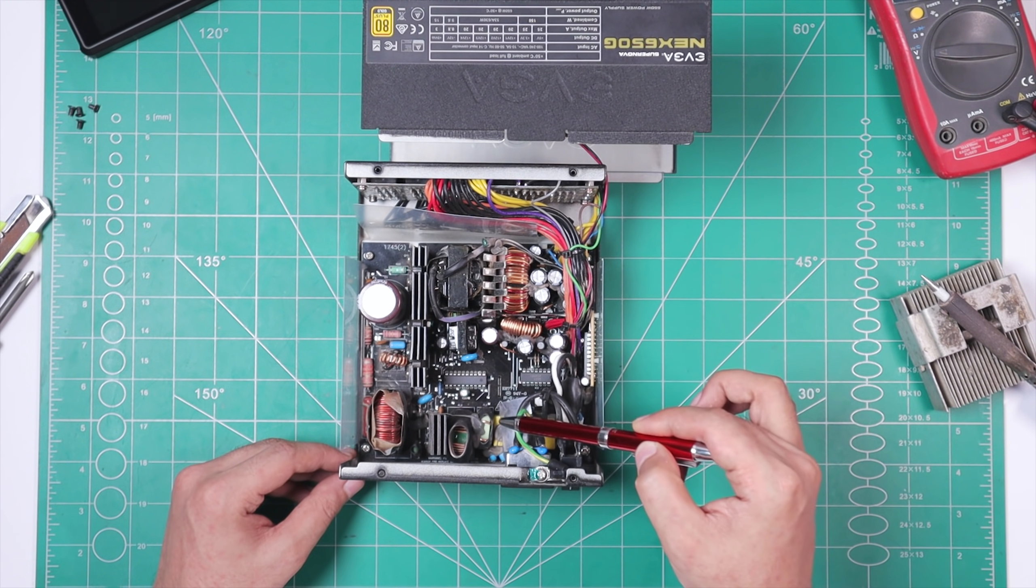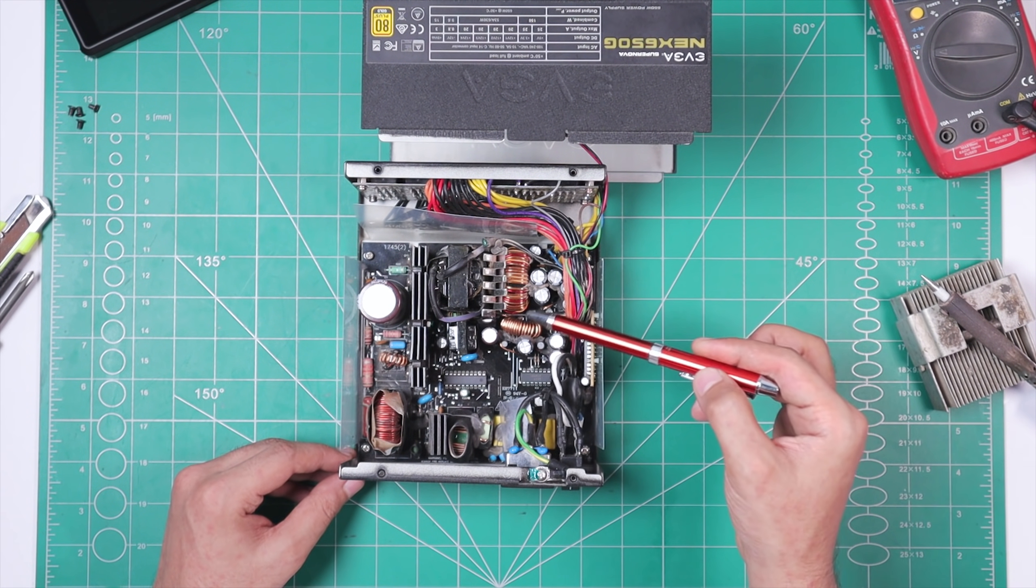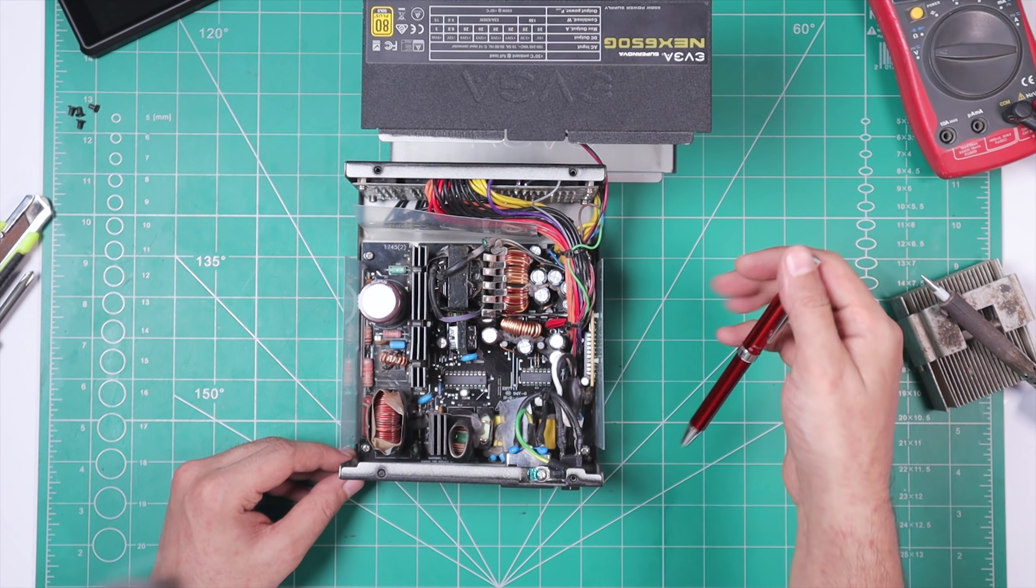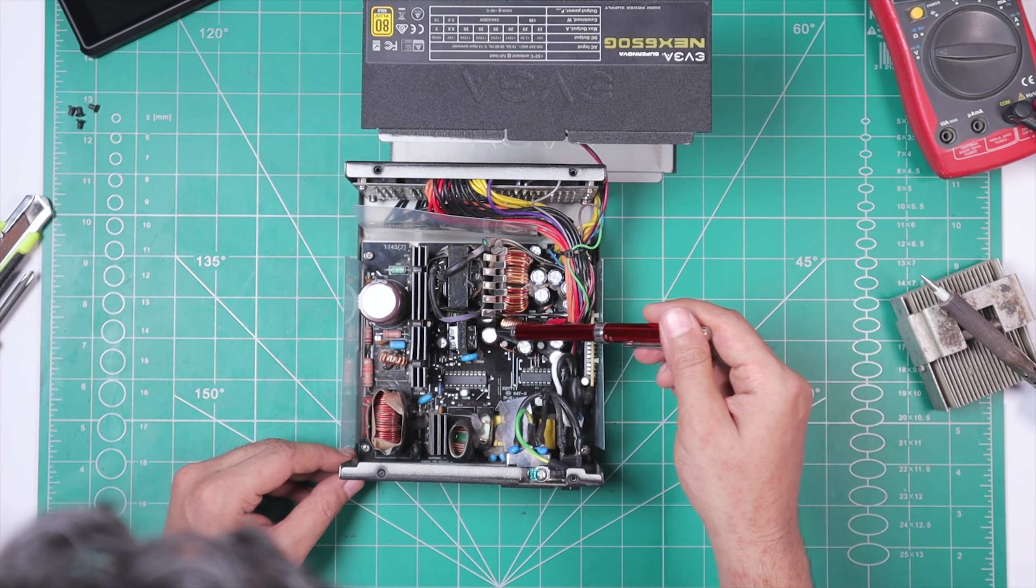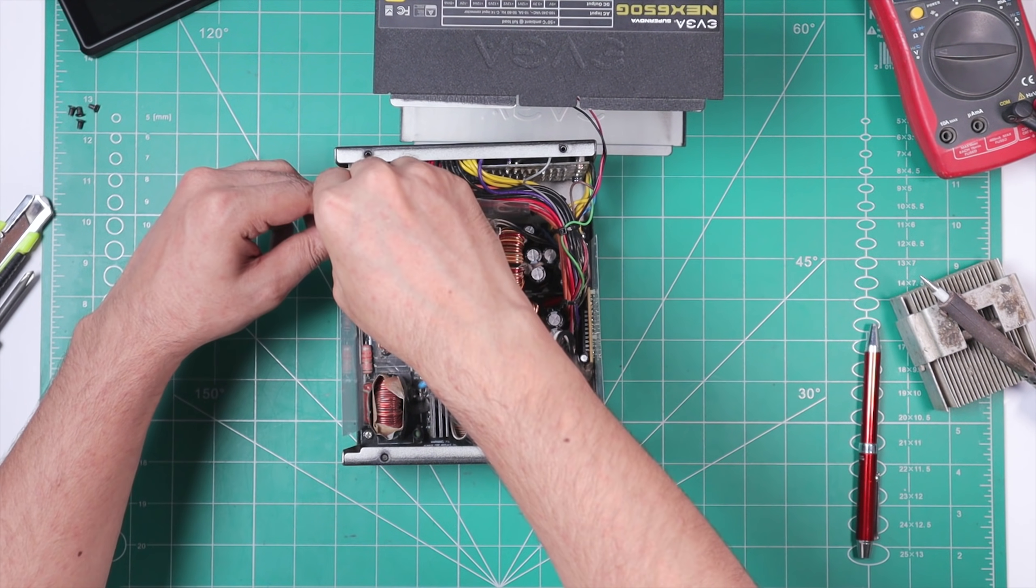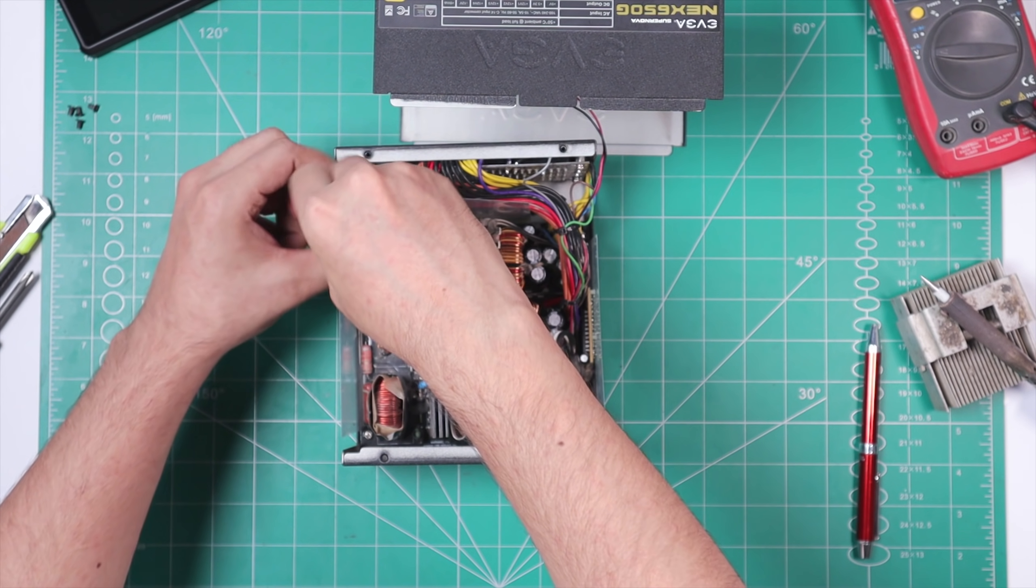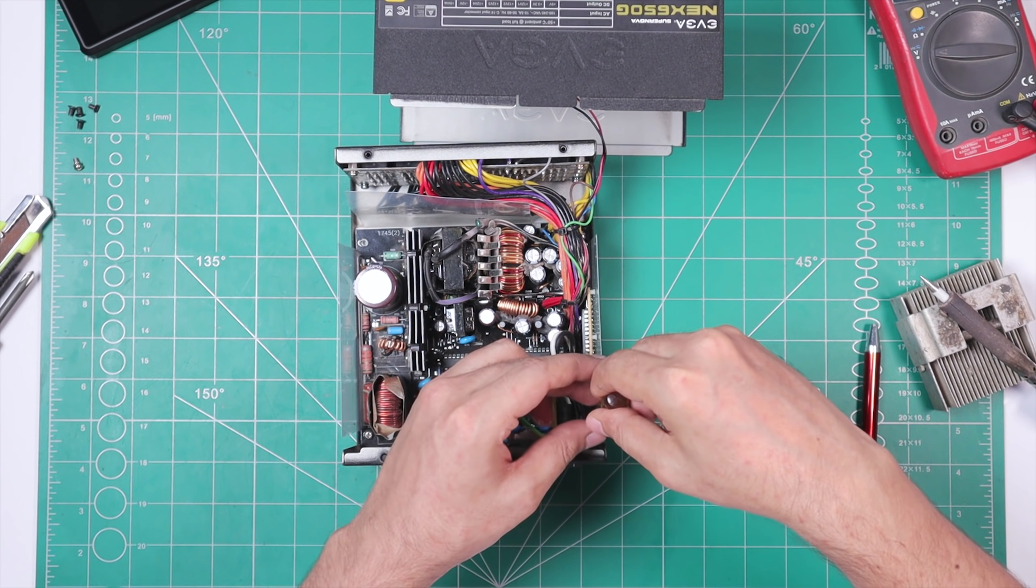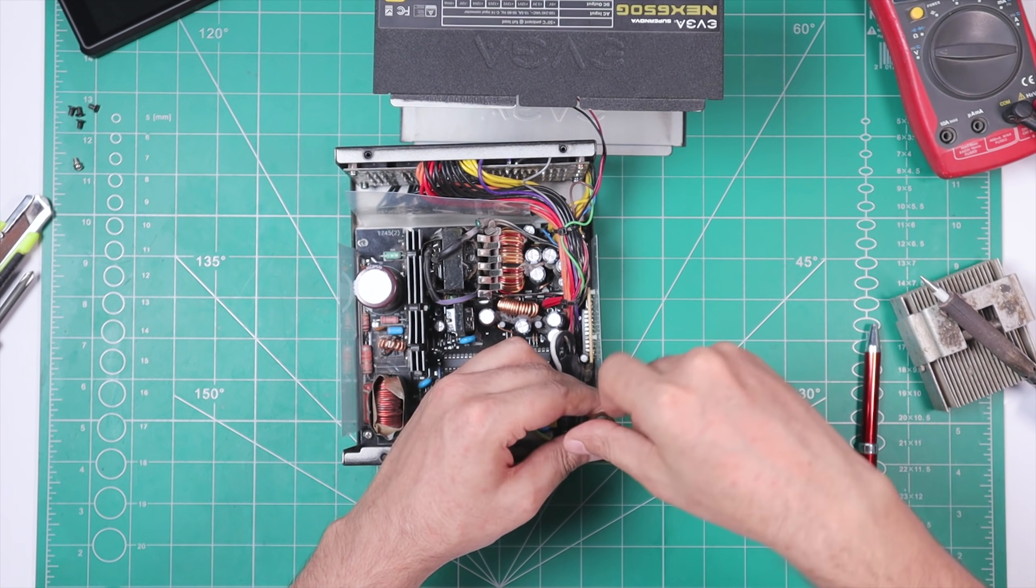Alright, so here is our secondary side and I'm gonna do the visual inspection first to see if there is any blown up IC or capacitor. So I actually can't find any problem here visually. I'm now gonna flip over the PCB and then we'll check if there is any short or component failure on the back using a multimeter.